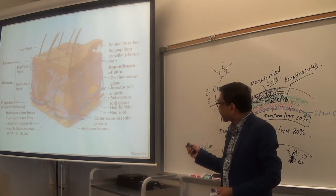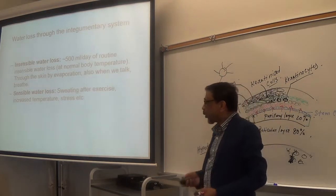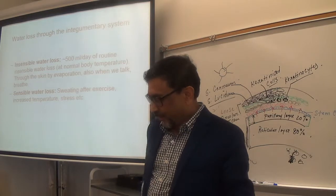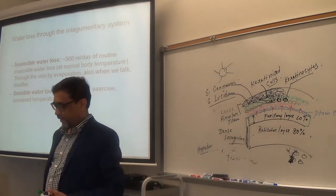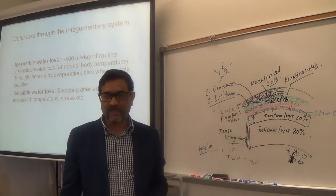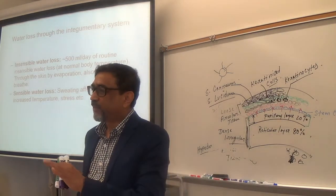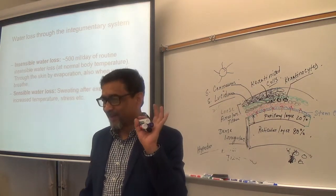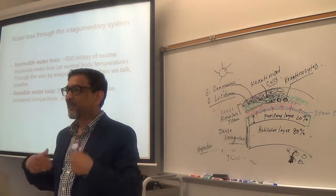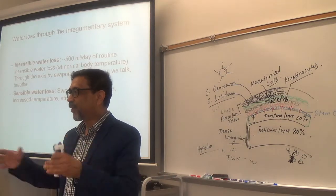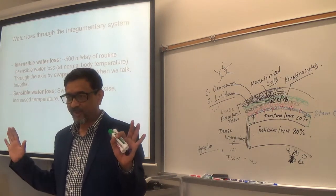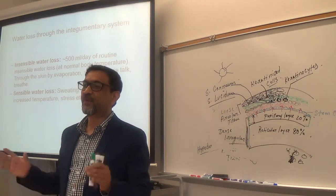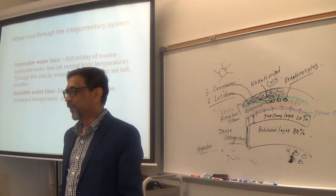Water loss from the body occurs in different ways, divided into two types: sensible and insensible. Sensible water loss means you can feel or see that you are losing water. Insensible water loss means you don't feel that you are losing water. Urine is sensible water loss; sweating is also sensible.